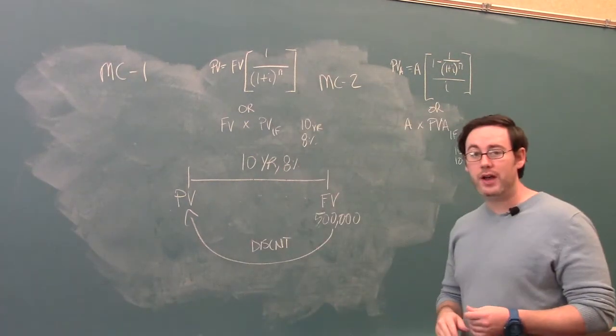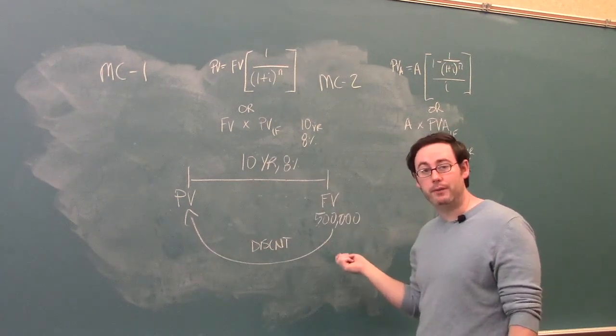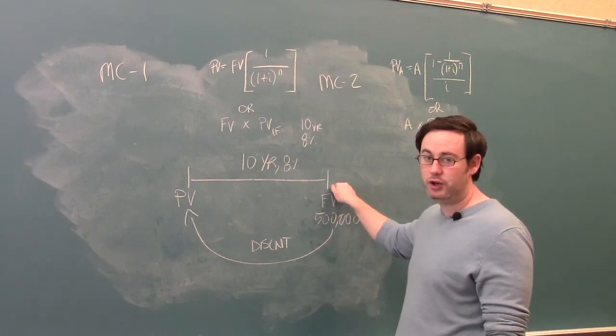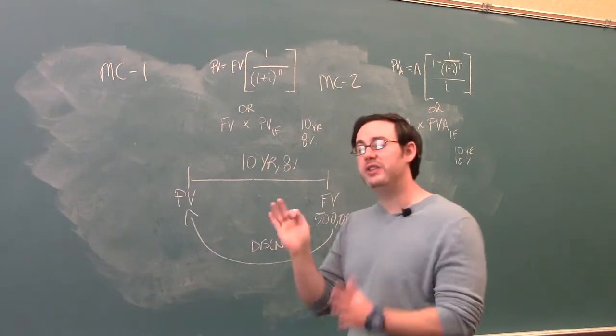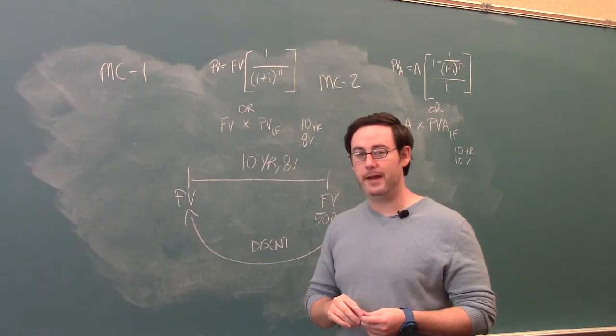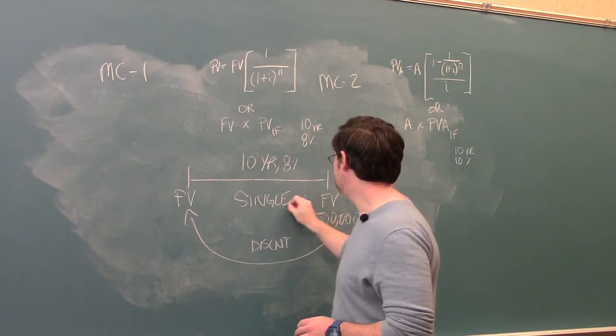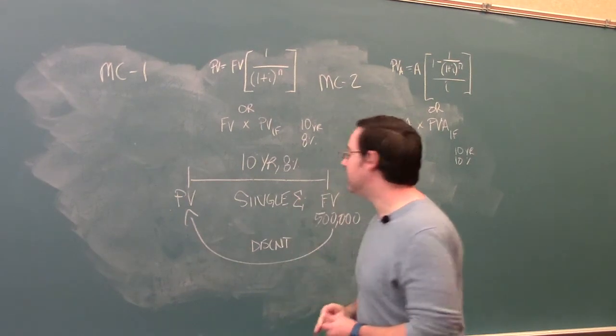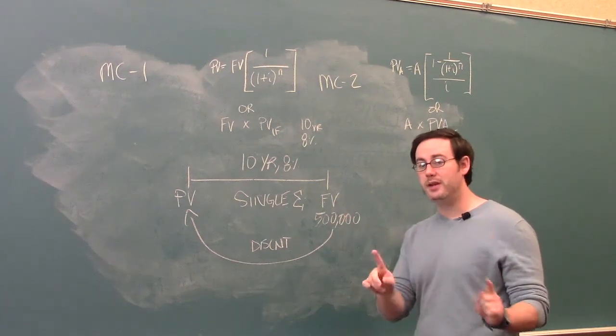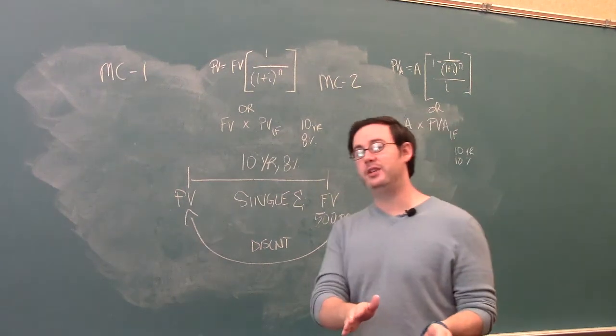One is a future value. Future value will tell us if we invest today, what will it end up being in the future? There's present value, which will tell us if we have something in the future, what is it worth today? And those are the single sum tables. Those are your first and second tables that you deal with in Appendix C in your book. Single sum, which is representative in this problem, means that there's one single amount. In this case, it's the $500,000 you receive at one time, some period in the future. That's the single sum.